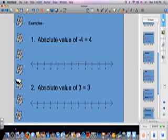If we have the absolute value of negative 4, it's 4, because it takes 1, 2, 3, 4 spaces from 0 to get to negative 4. Same with positive 3—the absolute value is 1, 2, 3 spaces from 0. That's what absolute value is.